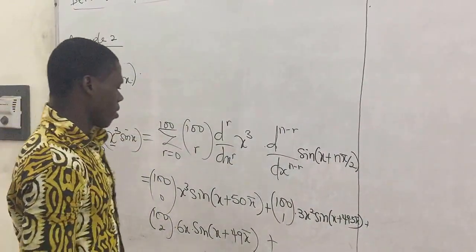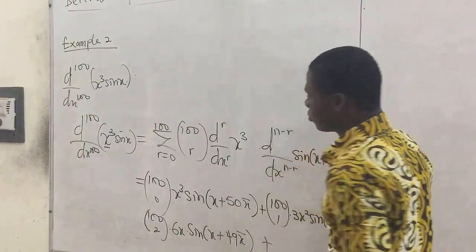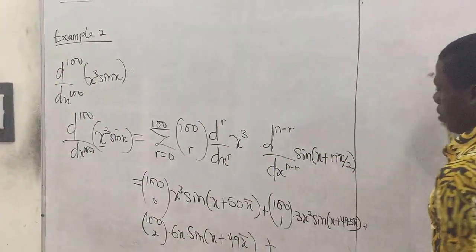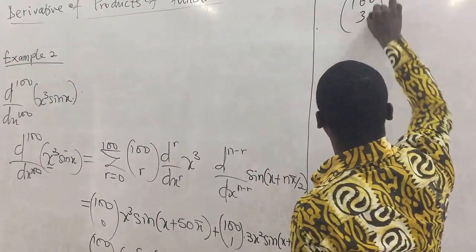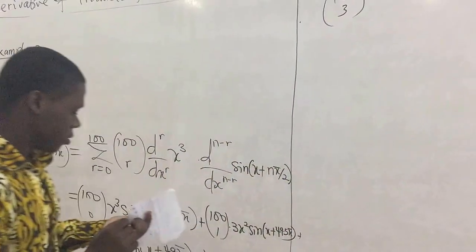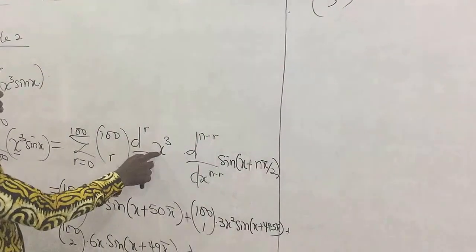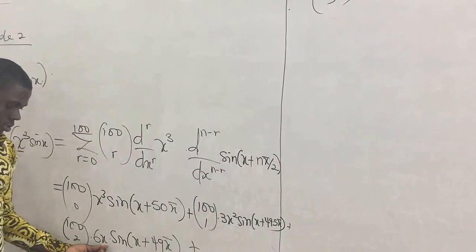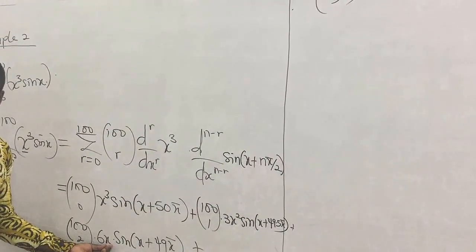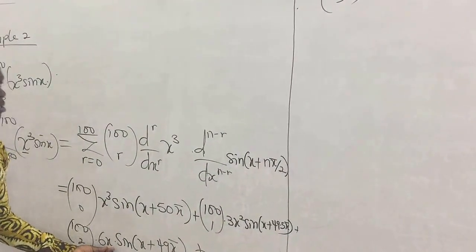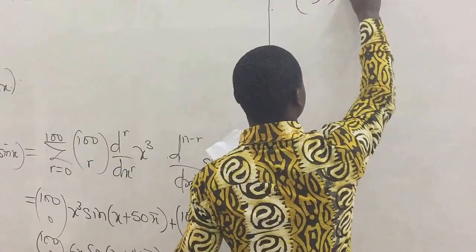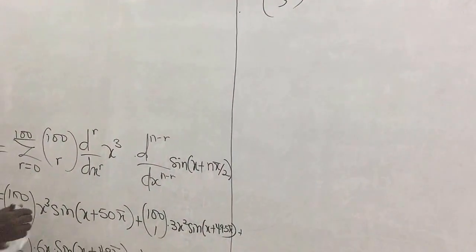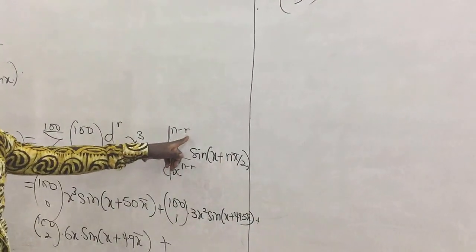So here our r was 2, moving on, our r becomes 3, so we have 100 combination 3. So r being 3 means we'll differentiate this one 3 times, but the second derivative gives us this. So if we differentiate again, we'll have 6, so this multiplied by 6.